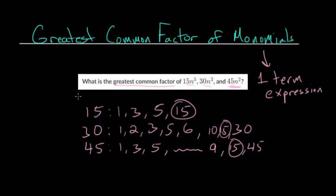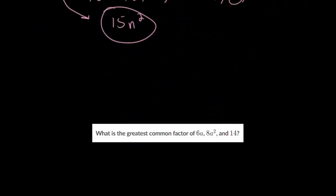So the greatest common factor of these variable expressions, we already know we can divide each of them by n squared, but we can also divide each of them evenly by 15. So 15n squared is the greatest common factor of these three monomials. Let's use this strategy and work on some more problems.